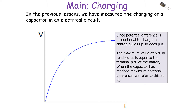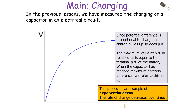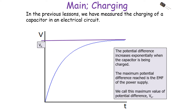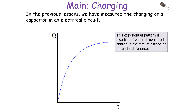When the capacitor has reached the maximum potential difference, we refer to this as V0. This process of charging is an example of exponential decay — the rate of change decreases with time. The maximum potential difference achievable on a capacitor is the EMF of the power supply, which we call V0. This exponential pattern is also true if we measure charge in the circuit instead of potential difference, because for a capacitor, capacitance is fixed, so charge and potential difference are directly proportional.